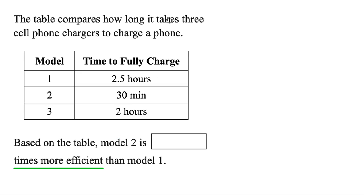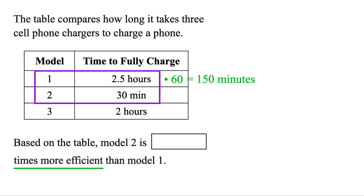The table compares how long it takes three cell phone chargers to charge a phone. Model 2 is how many times more efficient than Model 1? To compare these we want the same units — let's convert to minutes. Each hour has 60 minutes, just multiply by that, and using the calculator that'll give us 150 minutes. Next, to find how many times this could go into this, just use division: 150 divided by 30 equals 5. So Model 2 is 5 times more efficient.